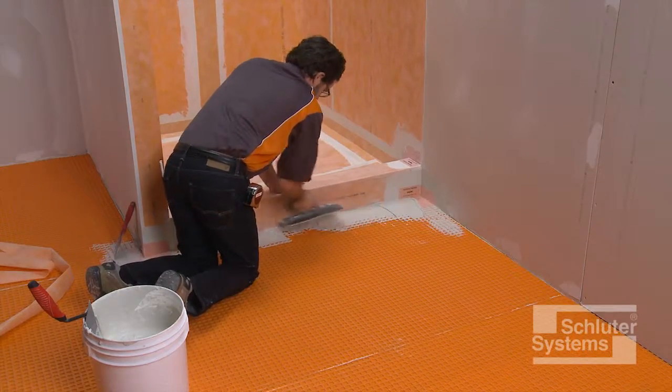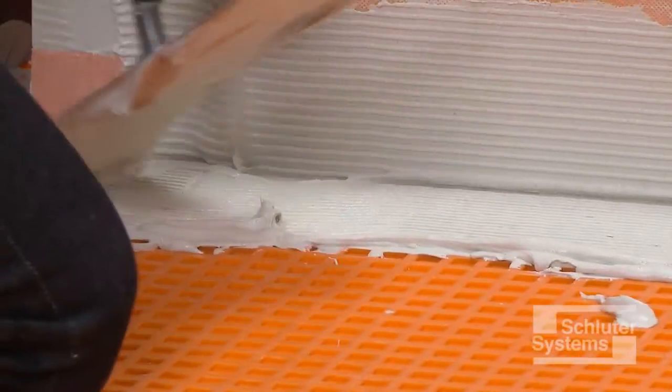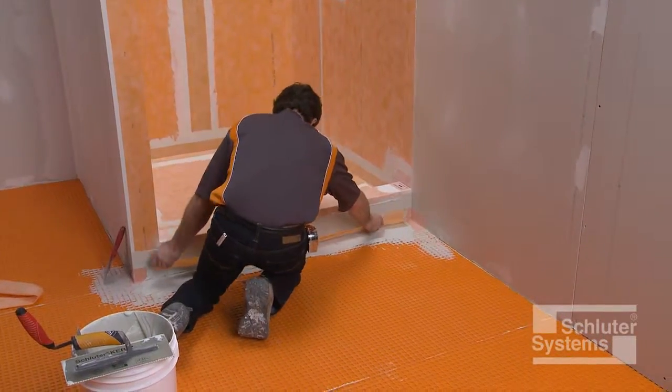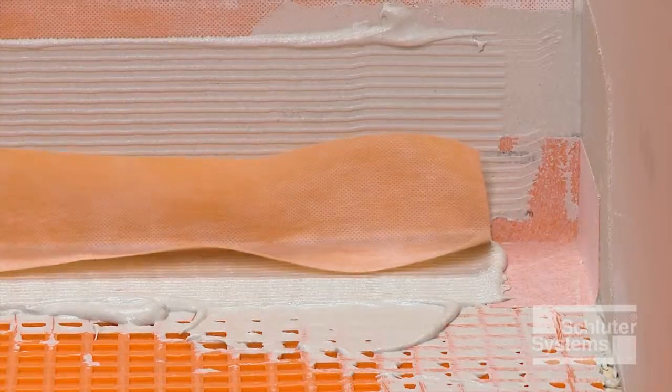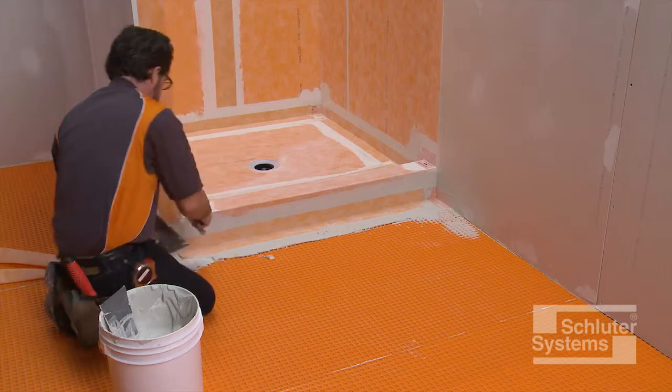Apply unmodified thin-set mortar to the area where the KERDI band is to be installed. Embed the KERDI band in the thin-set mortar using the flat side of the trowel to ensure full coverage and remove air pockets.